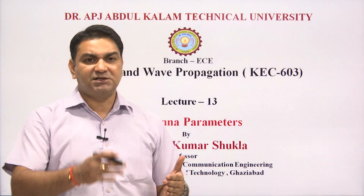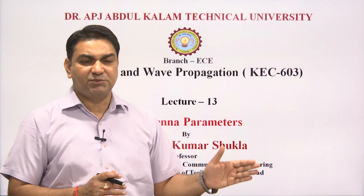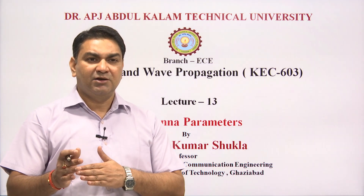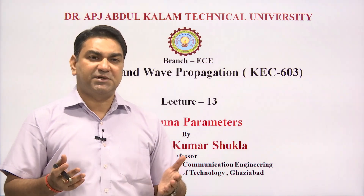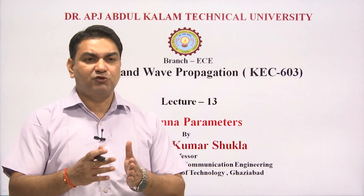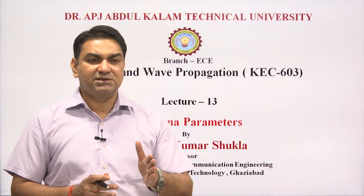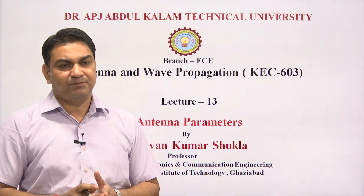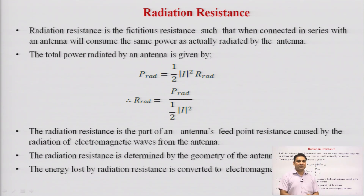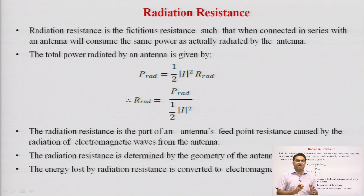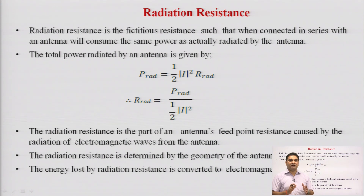The first network is the physical structure associated with the transmitter or receiver, and the second is where the physical structure of the antenna is associated with free space. Both these networks have to be connected with a resistance called radiation resistance. By its definition, radiation resistance is the fictitious resistance such that when connected in series with an antenna, it will consume the same power as actually radiated by the antenna.